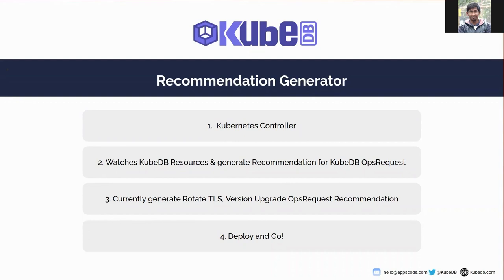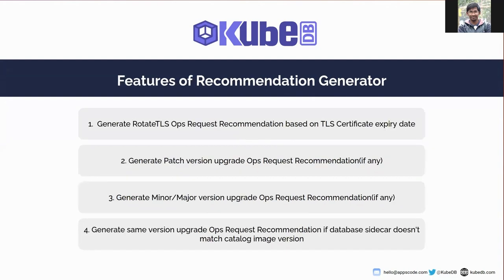Let's see the features of Recommendation Generator. It generates rotate TLS recommendations based on the TLS certificate expiry date. The default scenario is: if the TLS certificate lifespan is more than one month, then the rotate TLS recommendation will be generated one month before the TLS certificate renewal time. If the TLS certificate lifespan is less than one month, the rotate TLS recommendation will be generated before half of the lifespan of the TLS certificate.